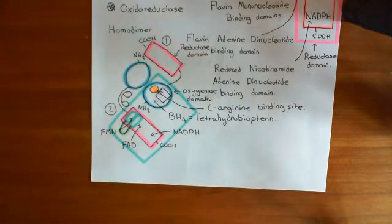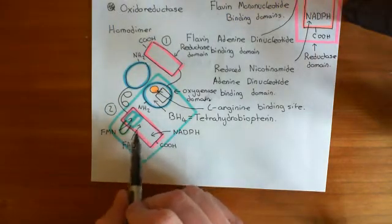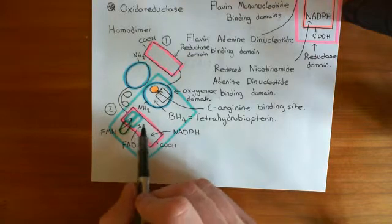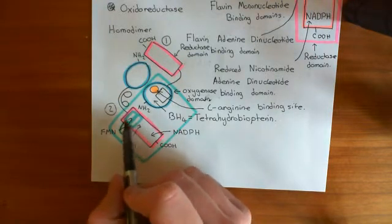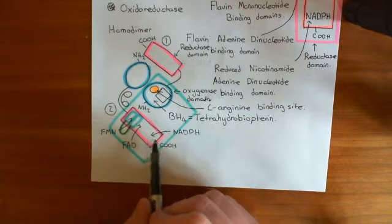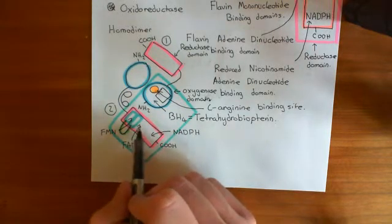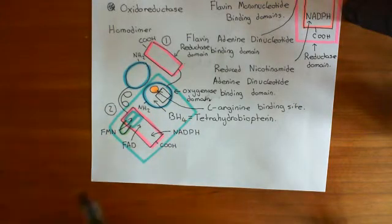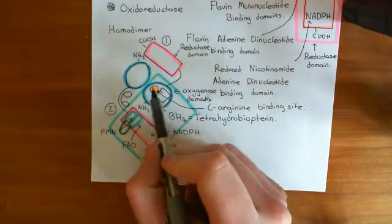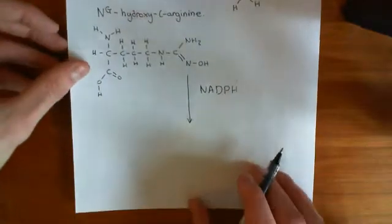And I should have stressed that maybe a bit more. These are these binding domains, but of course, the cofactors are going to come and bind here. So, the flavin adenine dinucleotide is going to bind here. The flavin mononucleotide is going to bind here. So, the electrons move down from the NADP to the flavin adenine dinucleotide, to the flavin mononucleotide, and then to the heme group, which will then donate them to the oxygen atom, well, the oxygen molecule, which is bound to that heme group.